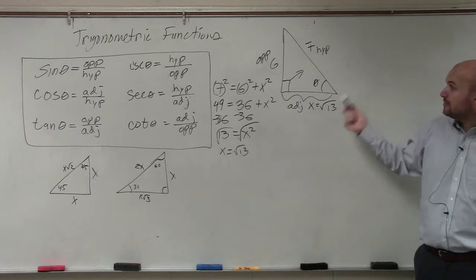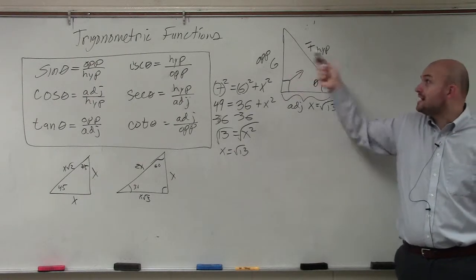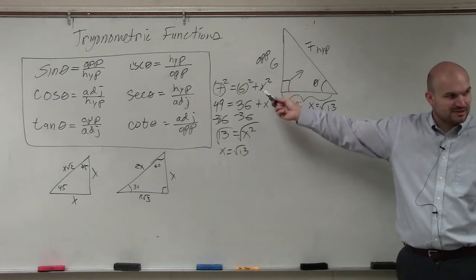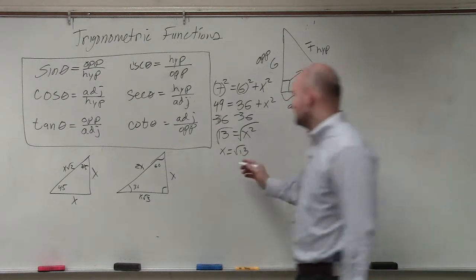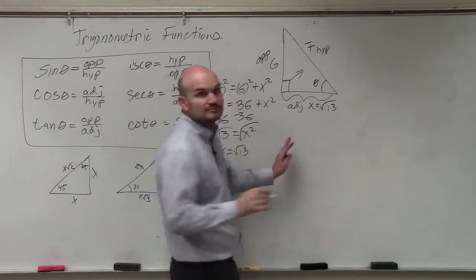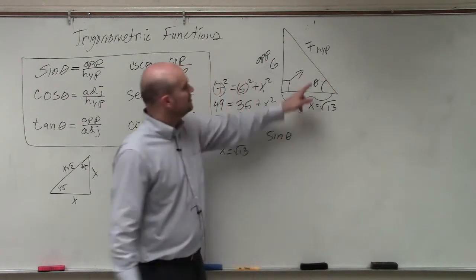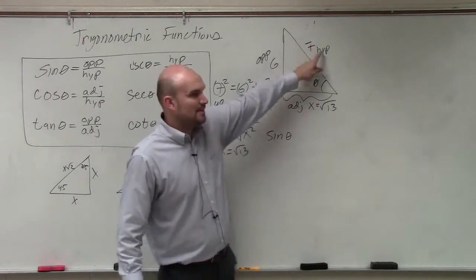So now, all we're going to do is we've labeled adjacent, opposite, hypotenuse. Now all we do is just do the sine, cosine, tangent. It's really not that hard. So now we just do sine of theta. Sine of theta, opposite over hypotenuse.